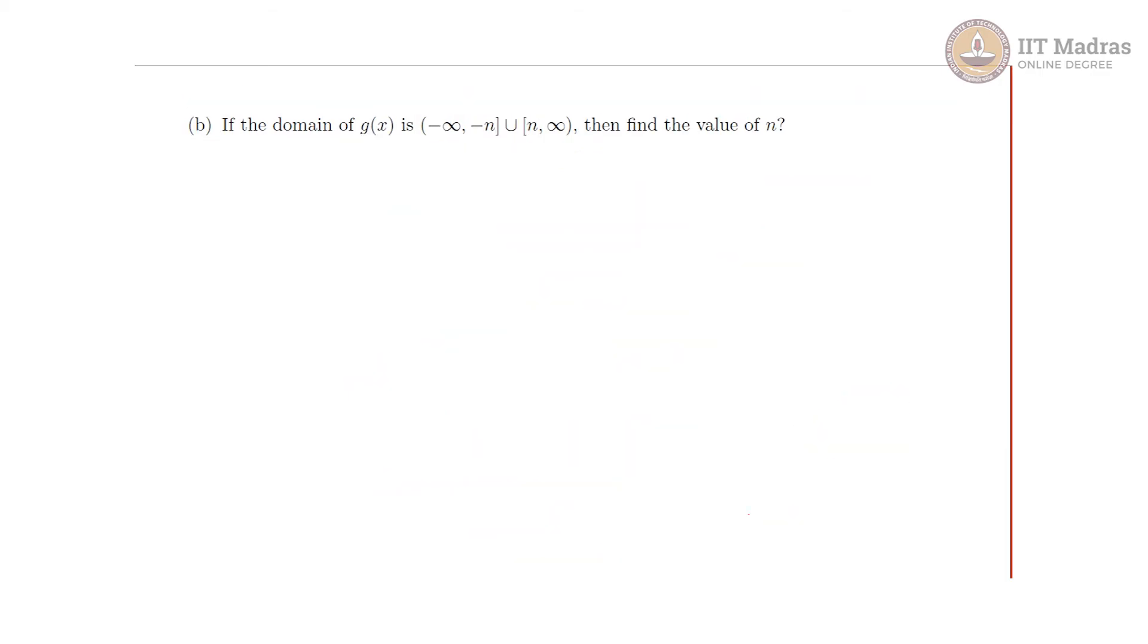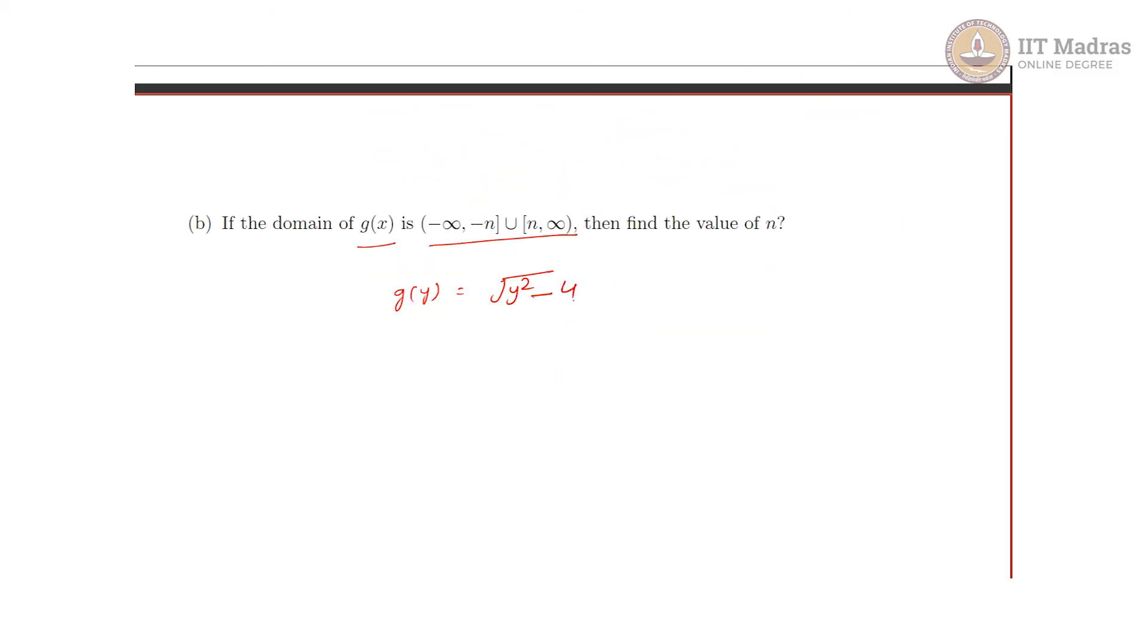For our second part we have g(x). The question is given g(y) = √(y² - 4). First we need to find what is g(x). We will just replace y with x. So it will be √(x² - 4), a square root function.